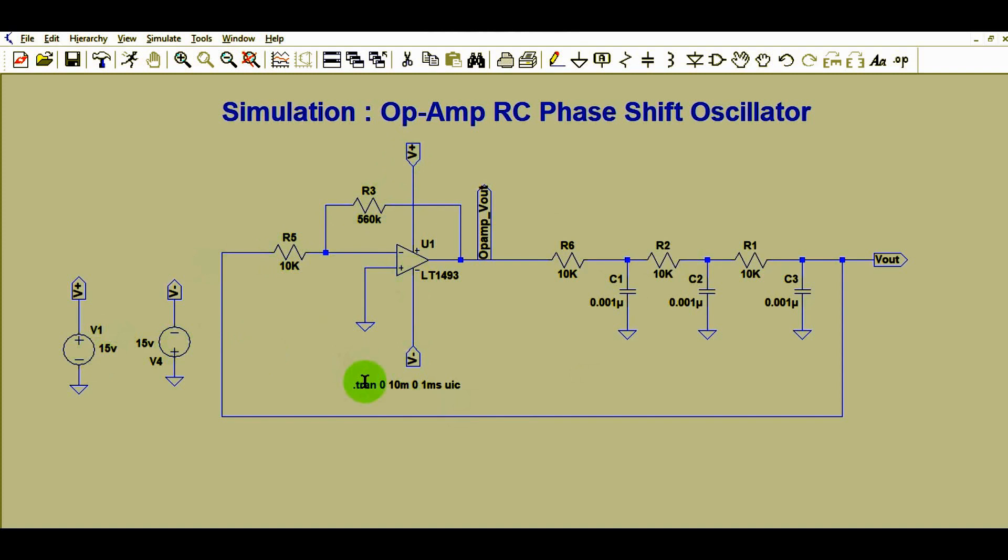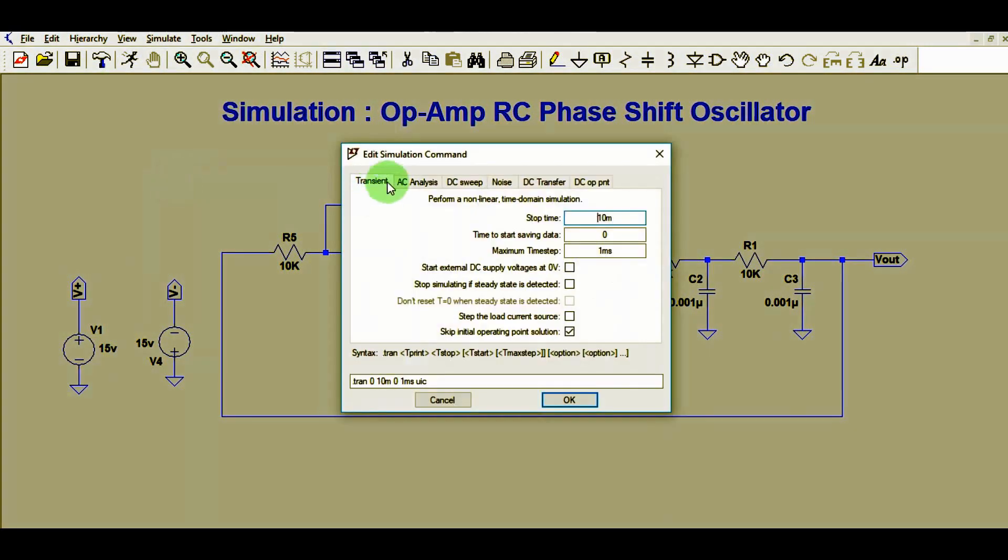I want to show the settings for transient analysis. Go to Simulate, then Edit Simulation Command. Here in Transient, select stop time - I've chosen 10 millisecond. Time to start saving data is 0 and maximum step is one millisecond. Then you have to tick here, this is for skip initial operating point solution.